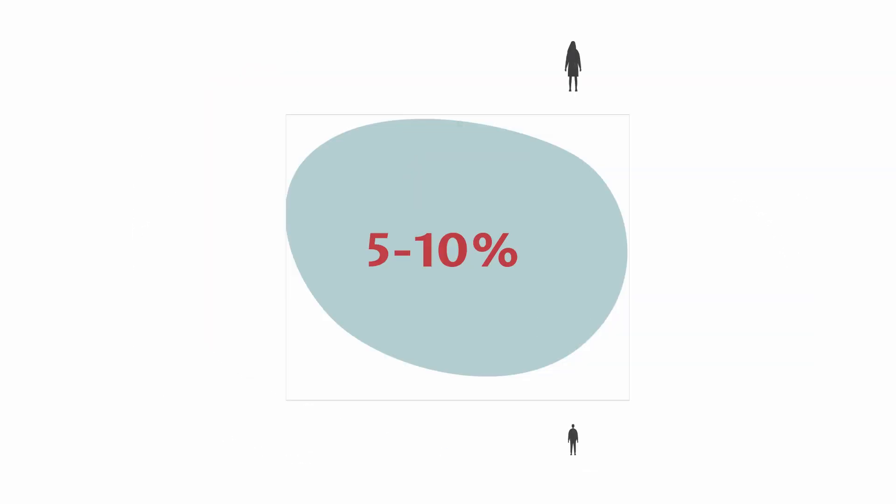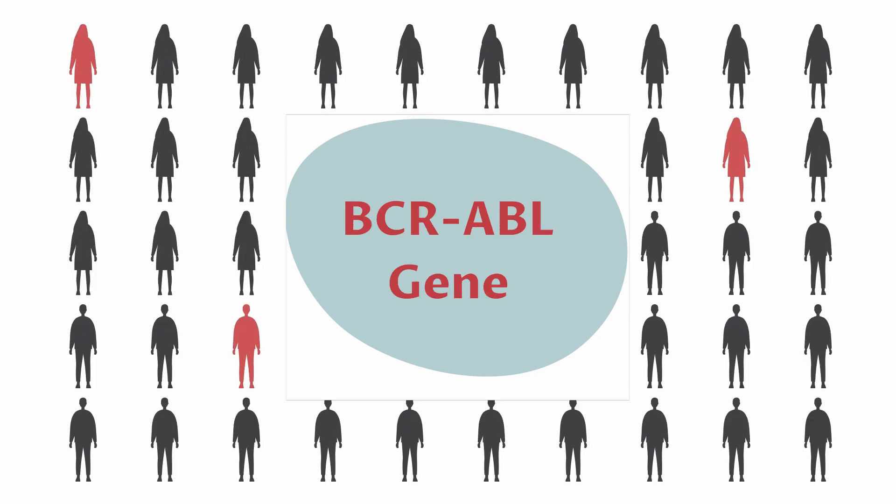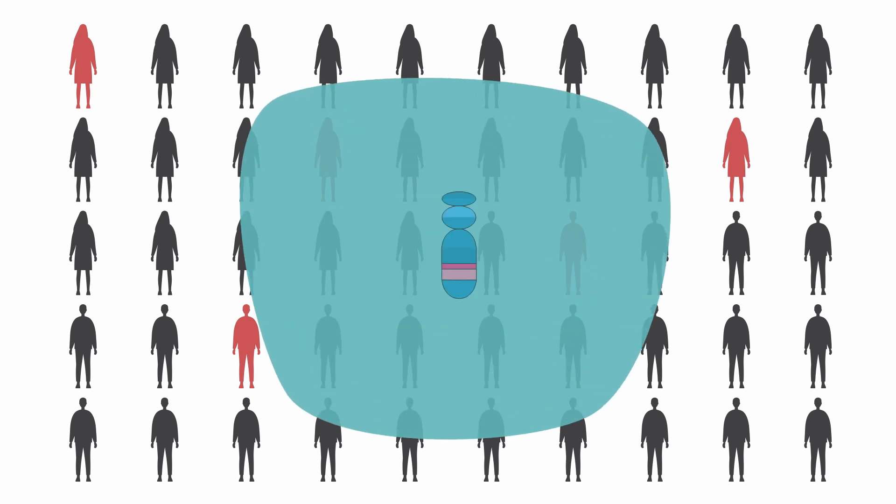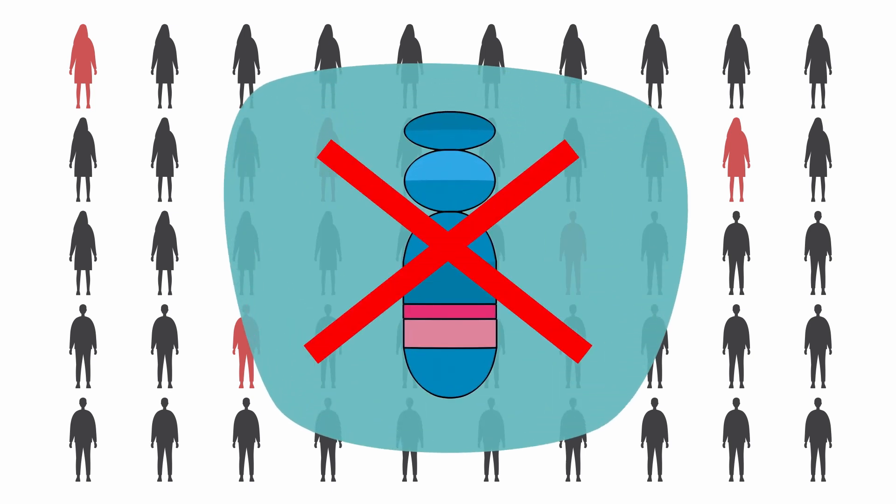In a very small number of CML cases, the BCR-ABL gene is present, but not the Philadelphia chromosome. It's unclear why this happens.